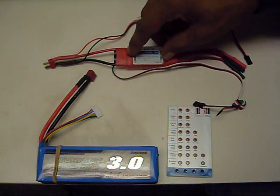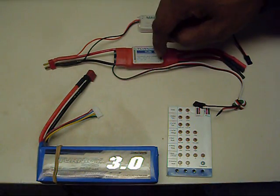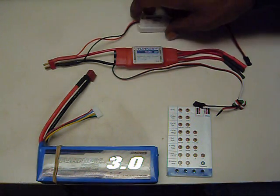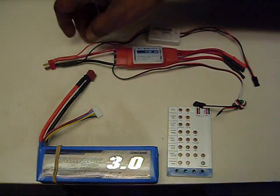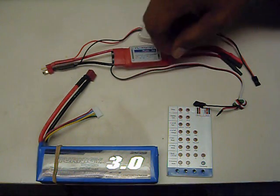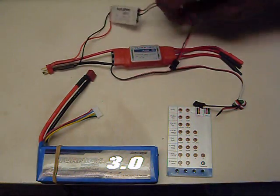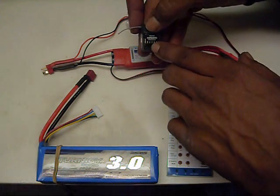Now a lot of ESCs have the BEC built into it. Now myself, I decided to go with an external BEC, that's what this part is. That's why I have it wired in here, it just wires in right to where it plugs into the battery there, and it plugs into my receiver under the battery port.